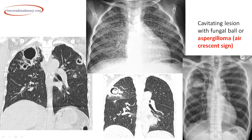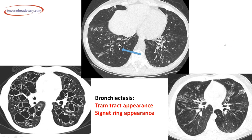If a pre-existing cavity is colonized by a fungal ball, this gives the air crescent sign with the fungal ball in a thick-walled cavitating lesion — typical of aspergilloma. The CT shows a thick-walled cavitating lesion with a fungal ball in the dependent part and an air crescent around it, which is pathognomonic of aspergilloma.